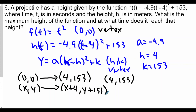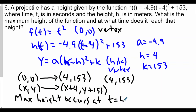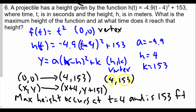Now this tells us the highest value occurs at the vertex. The maximum height occurs at t = 4 seconds — the x-coordinate of the vertex tells us when the maximum or minimum occurs. The y-coordinate of the vertex gives us the maximum height, which is 153 meters.